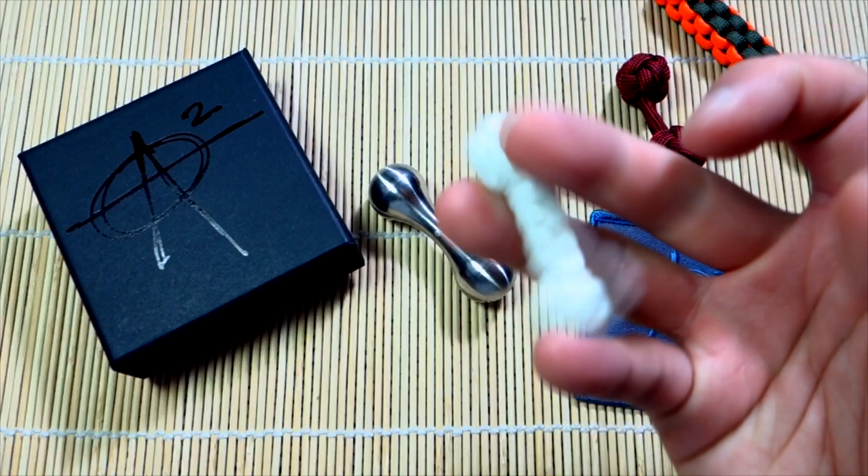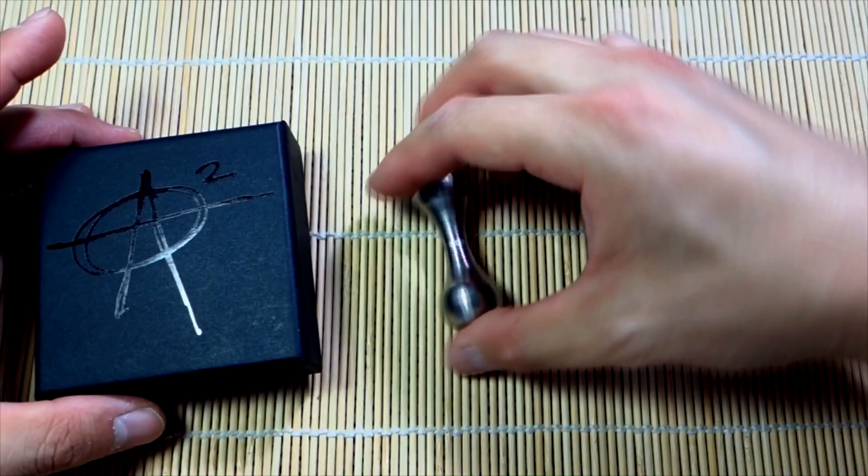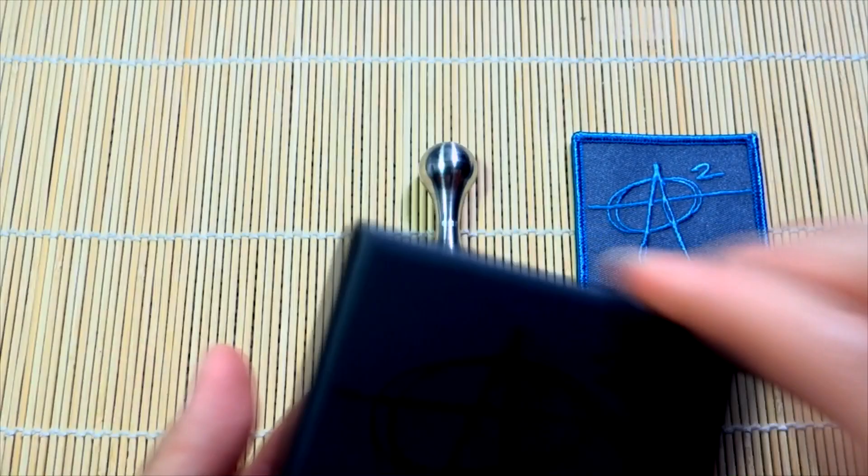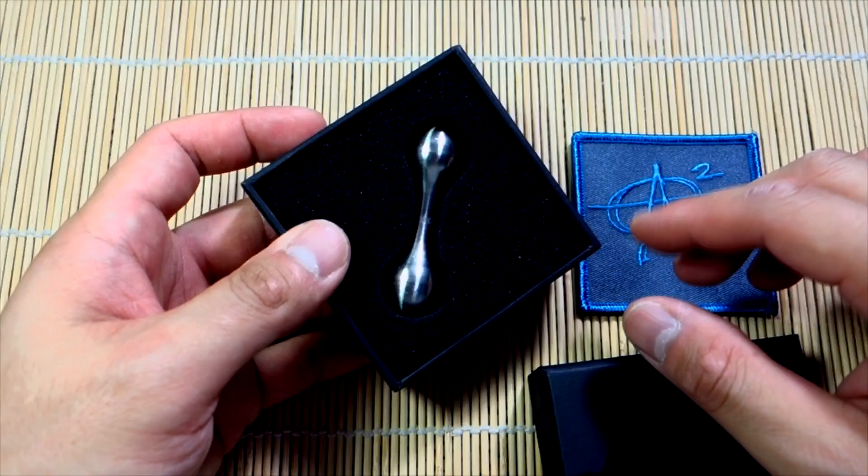So these are all just little hand toys or fidget toys that you manipulate with your fingers. Let's get those out of the way. Today we're looking at this - this is a really awesome offering from Around Square. Before we get into it, this is the box that it came in, has the nice newer logo from Around Square.